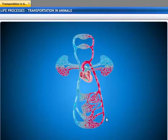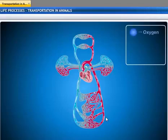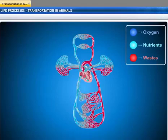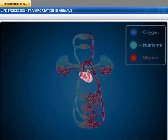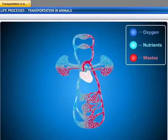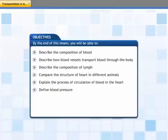Animals have an in-built transportation system for carrying oxygen, nutrients, and waste products. This system is referred to as the circulatory system and consists of the heart and a network of blood vessels. Unlike a train, the circulatory system cannot afford to delay the transport of any substance within a body. This lesson explains how various substances like blood and lymph are transported through the bodies of animals.